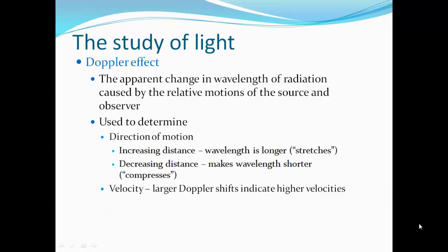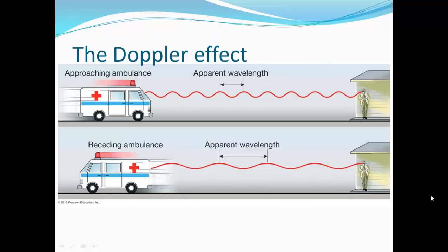The Doppler effect is the apparent change in wavelength of radiation caused by relative motions of the source and observer. It determines direction of motion. With increasing distance, the wavelength gets longer or stretches. Decreasing distance is compression, making wavelengths shorter. The velocity determines the larger the Doppler shift, indicating how fast an object is moving. If you're listening to the sound of an ambulance approaching you, the wavelengths get shorter, getting a higher and higher pitch. When the ambulance is receding, driving away from you, the wavelengths separate out to get longer and the sound gets lower pitch.